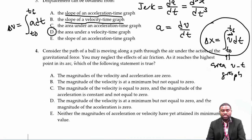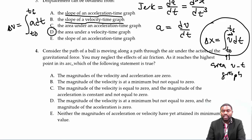The next question: consider the path of a ball moving along a path through air under the action of gravitational force. You may neglect the effect of air resistance and friction. As it rises and reaches the maximum height, which of the following statements is true?